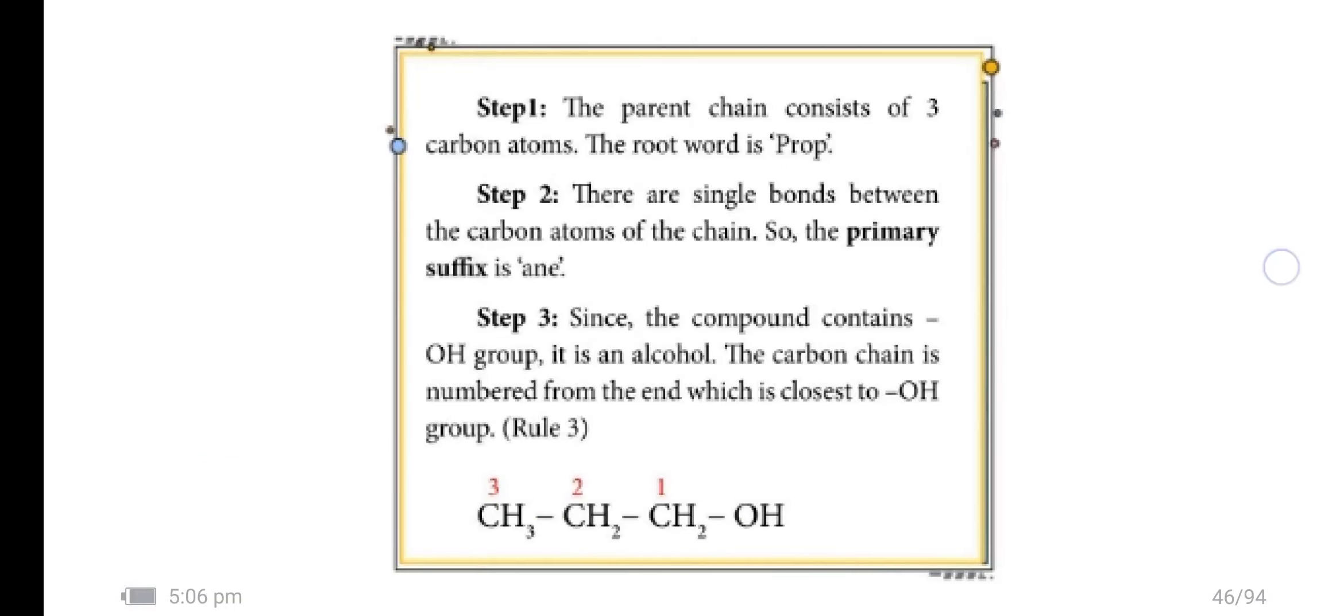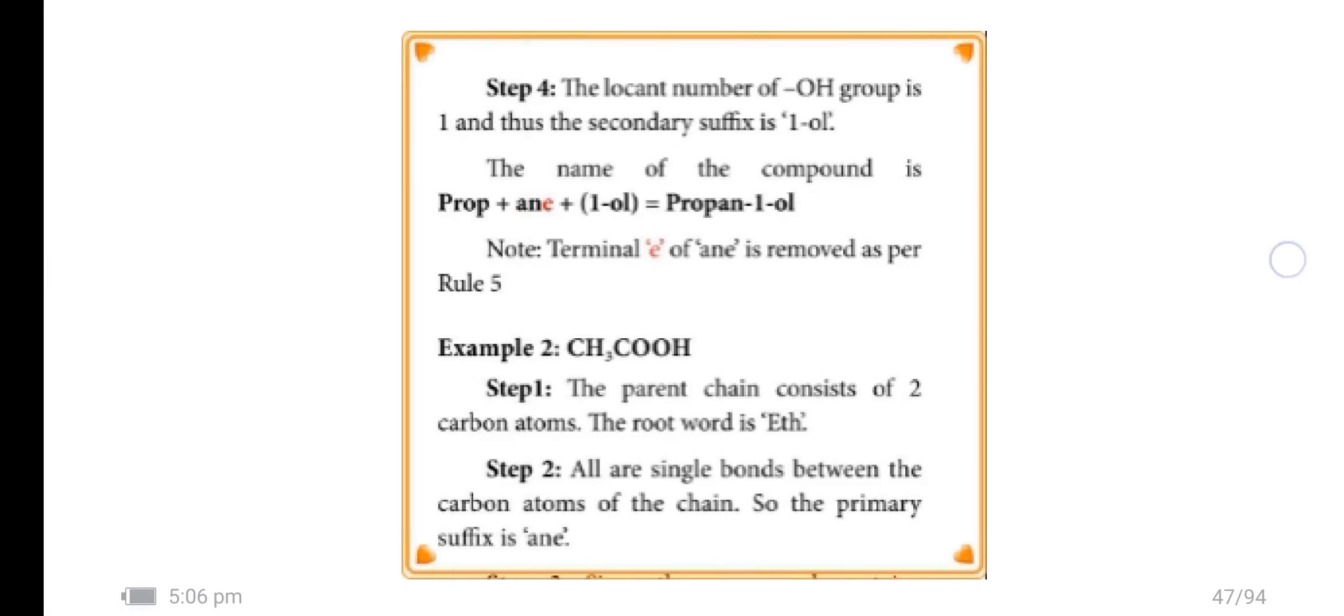Example 4: CH3-CH2-CH2-OH. The parent chain contains three carbon atoms. The root word is prop. There are single bonds between the carbon atoms. The primary suffix is 'an'. Since the compound contains OH group, the carbon chain is numbered from the end in which OH is closest. The locant number of the OH group is 1 and the secondary suffix is 'ol'. The name is propan-1-ol or prop-1-ol.